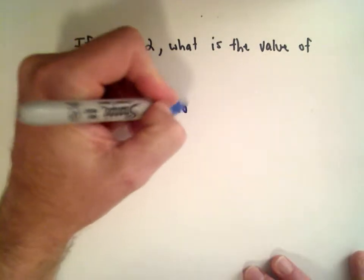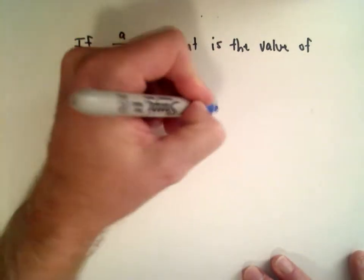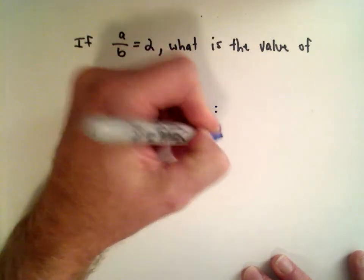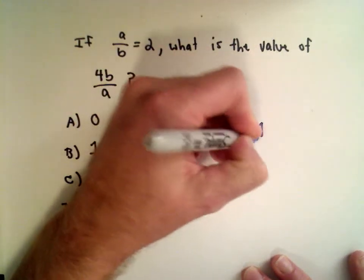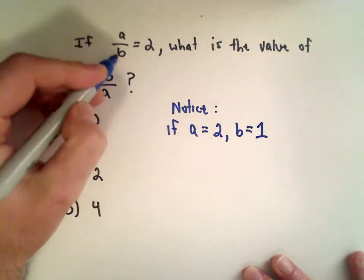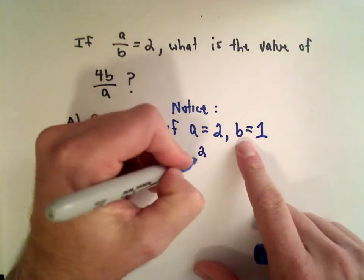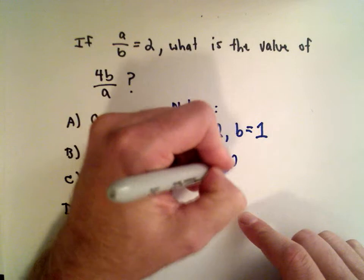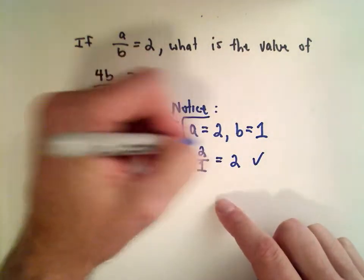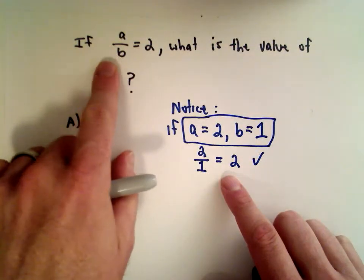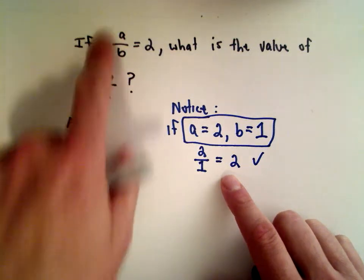So notice, if A equals 2 and B equals 1, right, we would have A divided by B, that would be 2 over 1, that equals 2. Okay, so these values of A and B satisfy this original requirement.